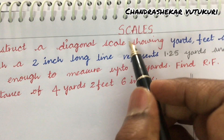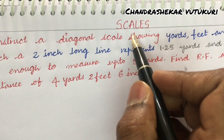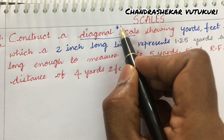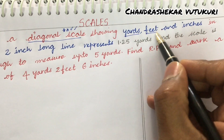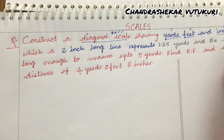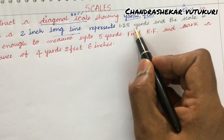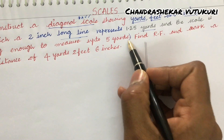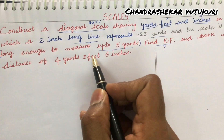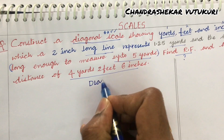Welcome back students. I have come up with one more important question related to the concept of scales. The question from scales is a compulsory question — it may be a diagonal scale or plane scale. The question is: construct a diagonal scale showing yards, feet and inches. As it is a diagonal scale, it can read up to 3 units. A 2-inch long line represents 1.25 yards, and the scale is long enough to measure up to 5 yards. Find the RF and mark a distance of 4 yards 2 feet and 6 inches on the scale.